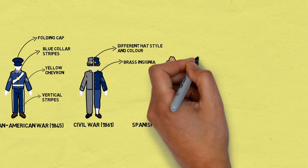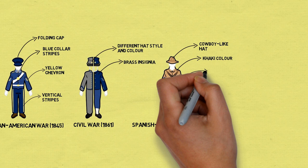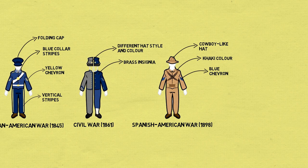Spanish-American War 1898: Uniforms at this point were replaced by a khaki color inspired by British uniforms. The materials of the uniforms shifted from wool to cotton, and special campaign hats were issued.